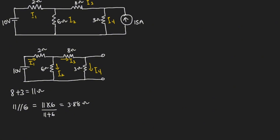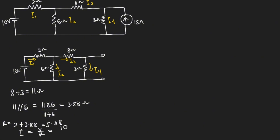This 3.88 ohms will be in series with the 2 ohms. So at the end we have 2 plus 3.88 for the total resistance, which equals 5.88 ohms. We can then find the current I to be equal to V over R, which is 10 volts over 5.88, giving us a value of 1.7 amperes.